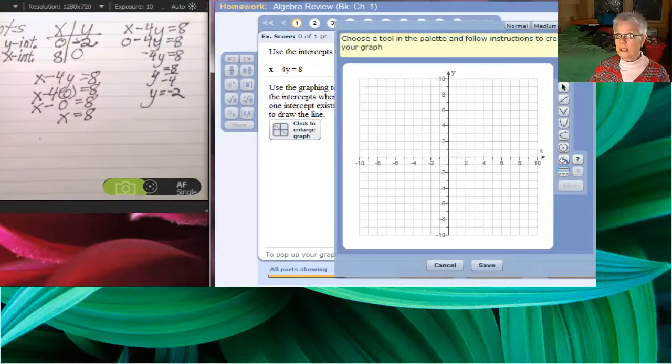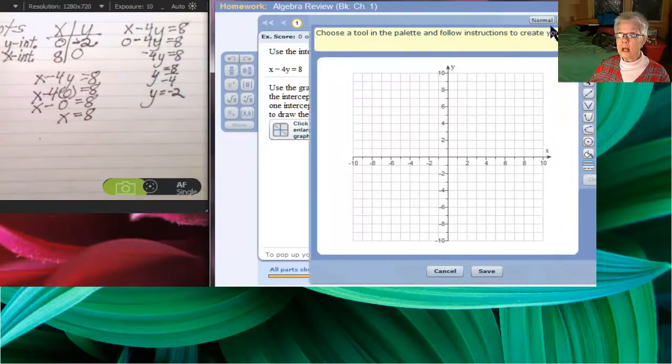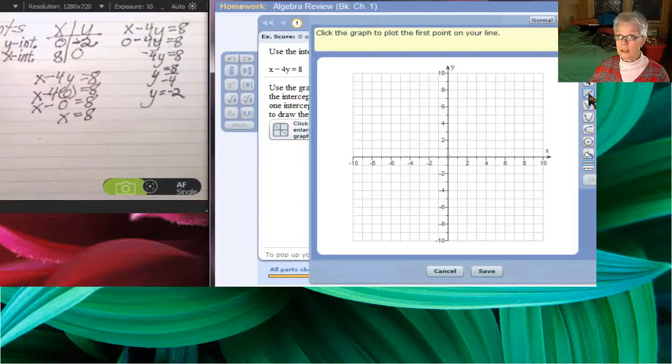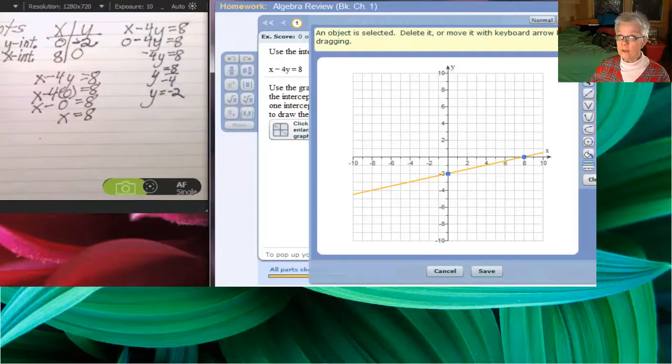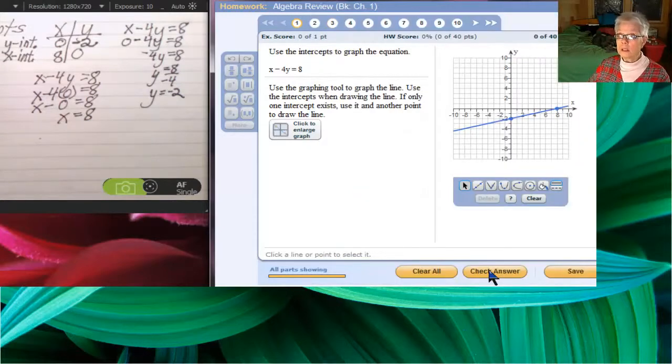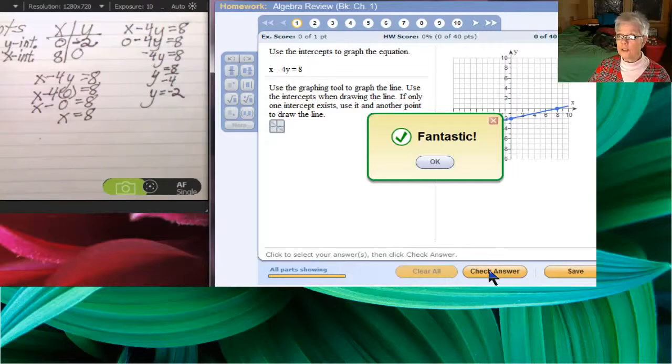Now, let's graph this. I'm going to click on the magnifying glass icon and click on medium. I'm going to click on the line tool. I'm going to find 0, negative 2, and then 8, 0. I click on those, save the line, check my answer, and we were correct.